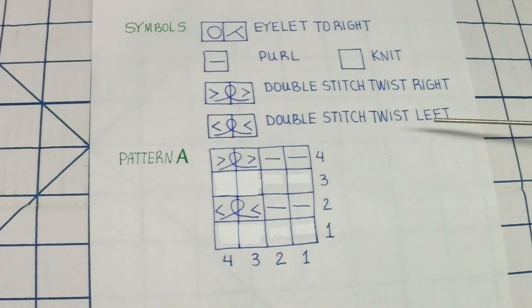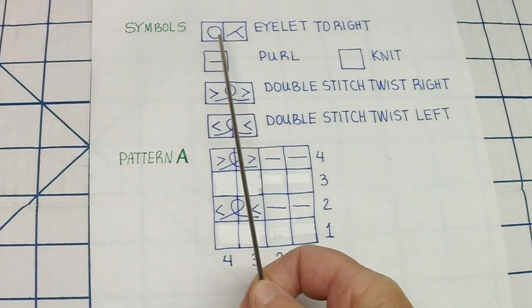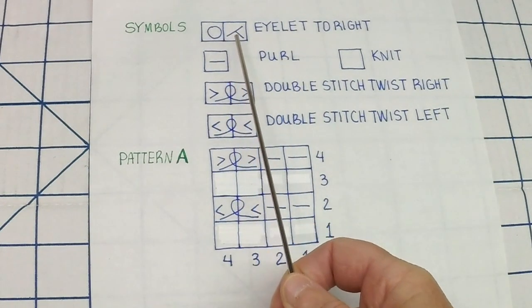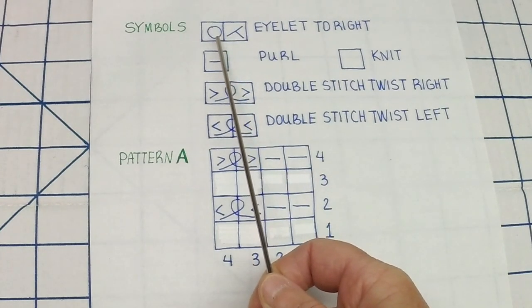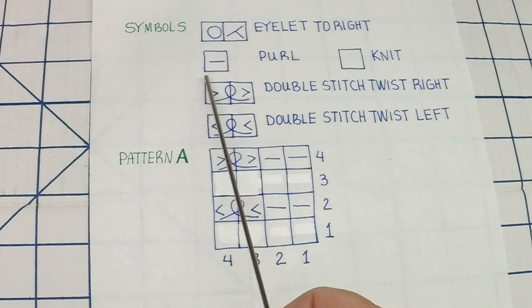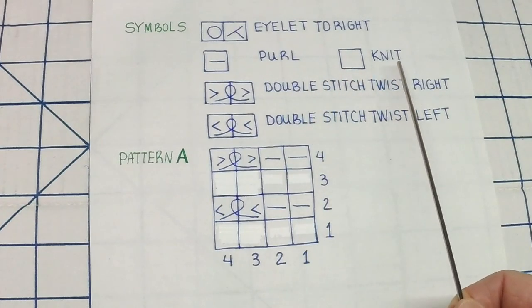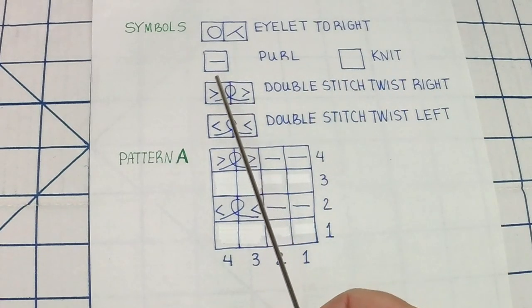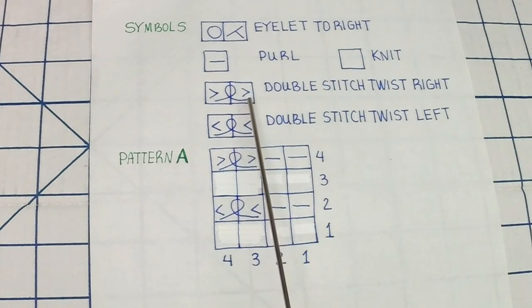These are the symbols that I use on the schematic. This is an eyelet symbol indicating that the stitch has to be transferred to the right. You have your purl, your knit, double twisted stitch with the transfer tool rotating to the right and double twisted stitch with the transfer tool indicating twisting to the left.